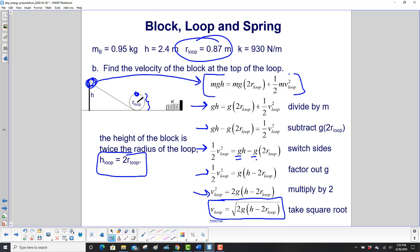And again, in words, what this value is, it's the square root of 2 times g times the difference in height between the initial position and the position at the top of the loop.